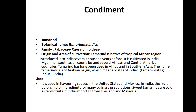Next is tamarind. Its botanical name is Tamarindus indica. It comes under the family Fabaceae, subfamily Caesalpinioideae. Tamarind is native to the tropical African region but is cultivated in India, Myanmar, South Asia, Africa, and Central America.